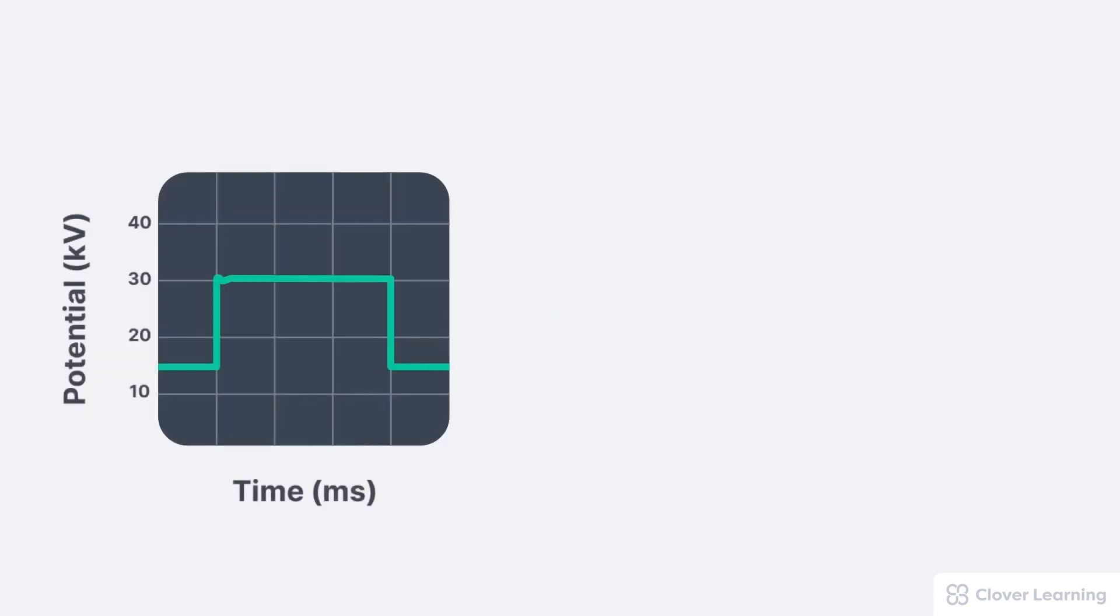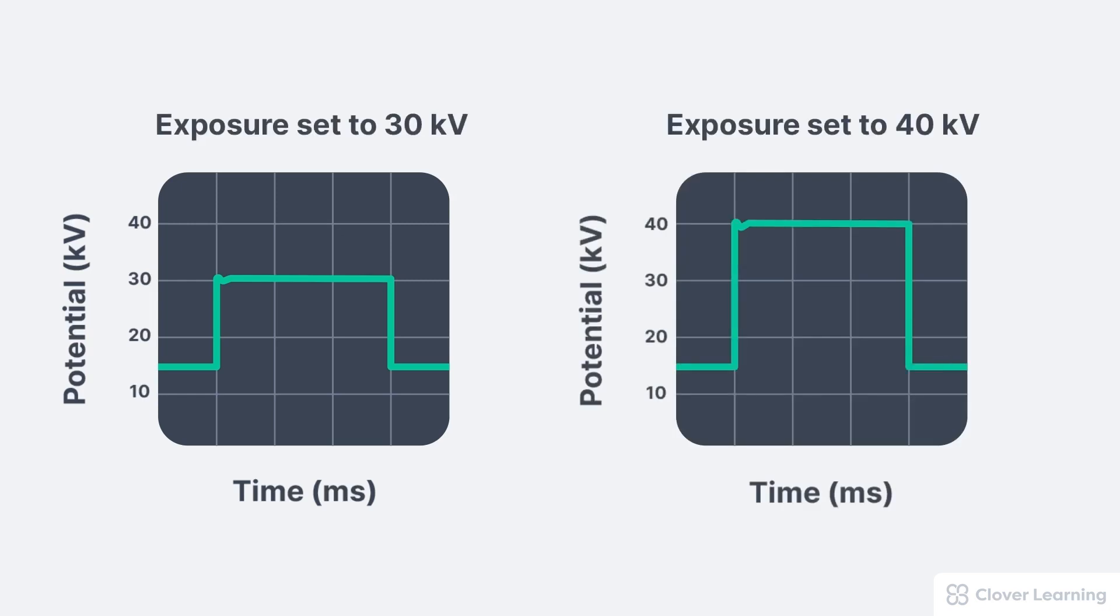Each of these waveforms looks unique. A perfect KV waveform generates the selected KV from the very beginning to the very end of the exposure. This is considered a flat waveform. For example, if the exposure is set to 30 KV, the system should generate exactly 30 KV for the entire exposure.